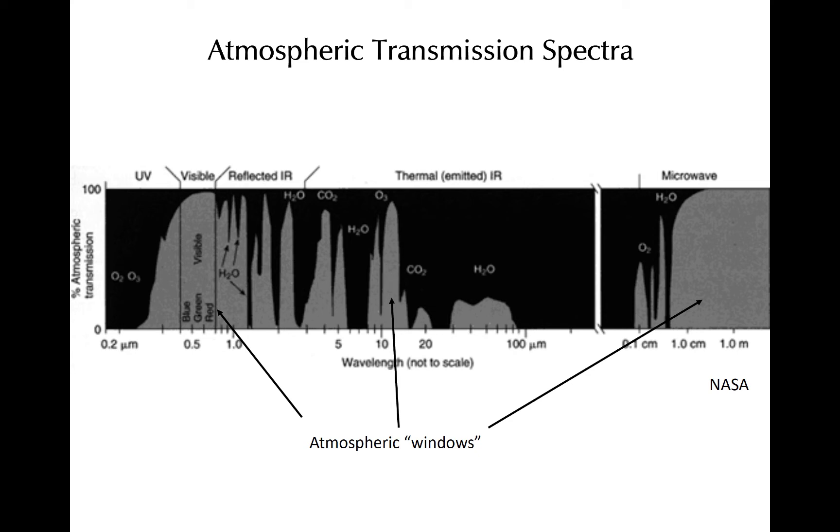For example, the atmosphere is fairly transparent to 11 micron radiation. Such bands are known as atmospheric windows.